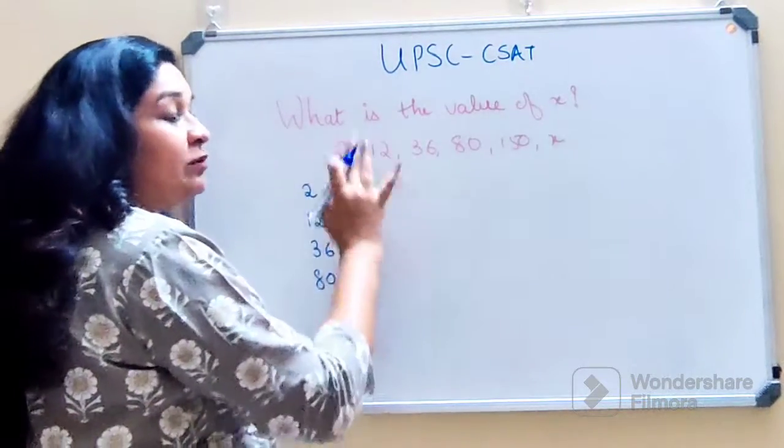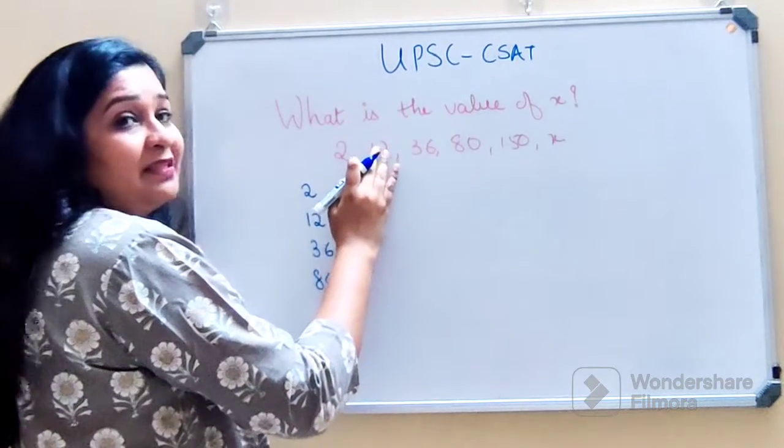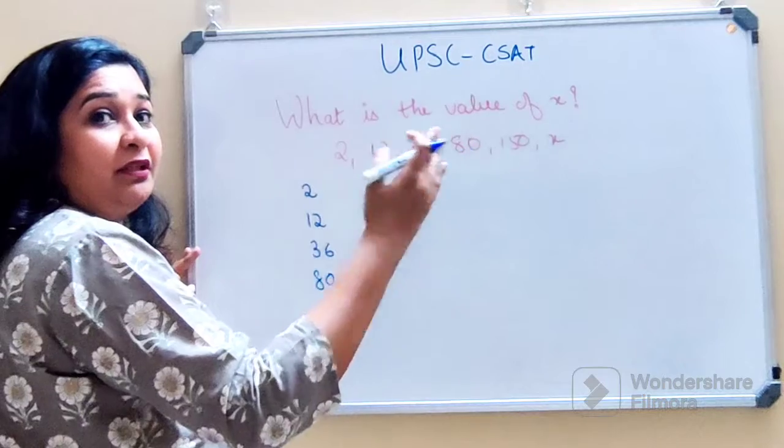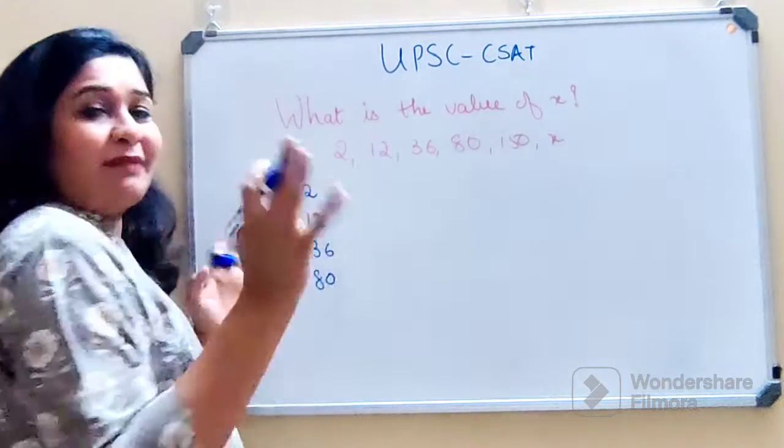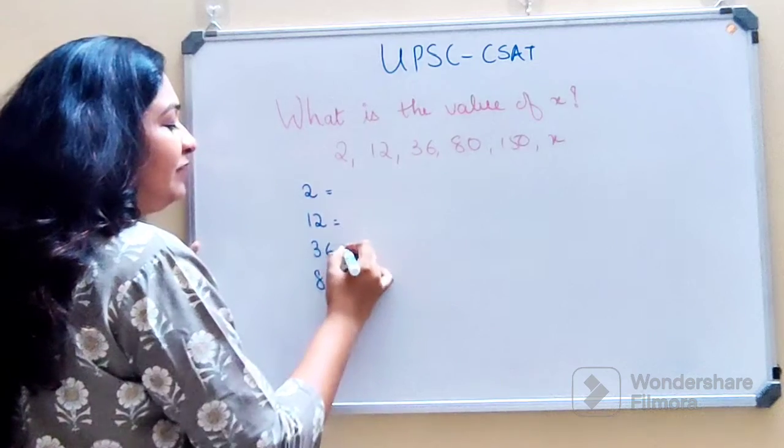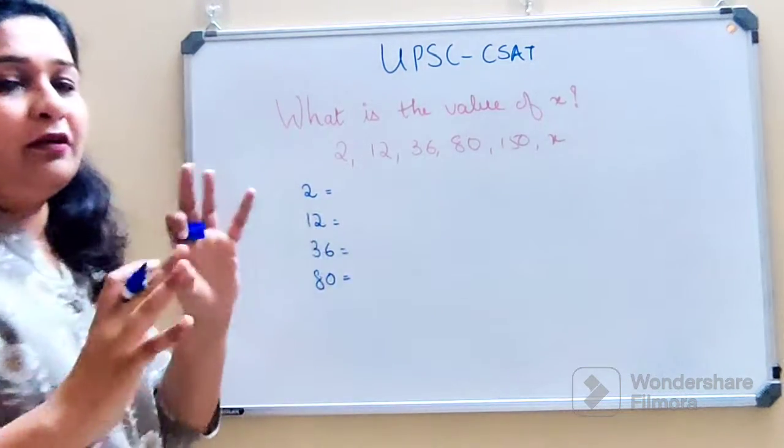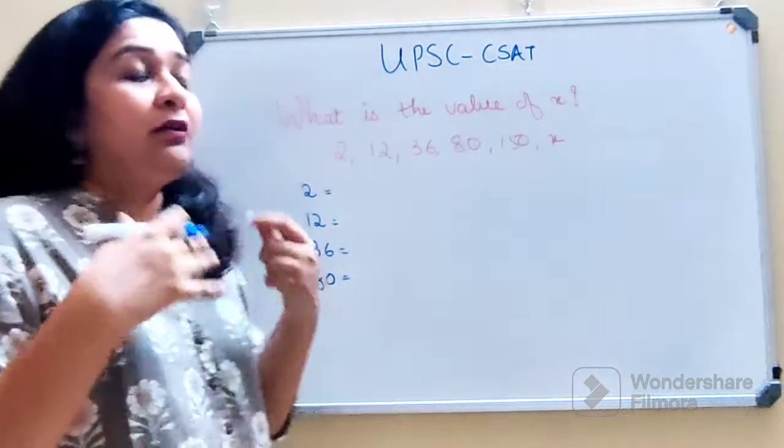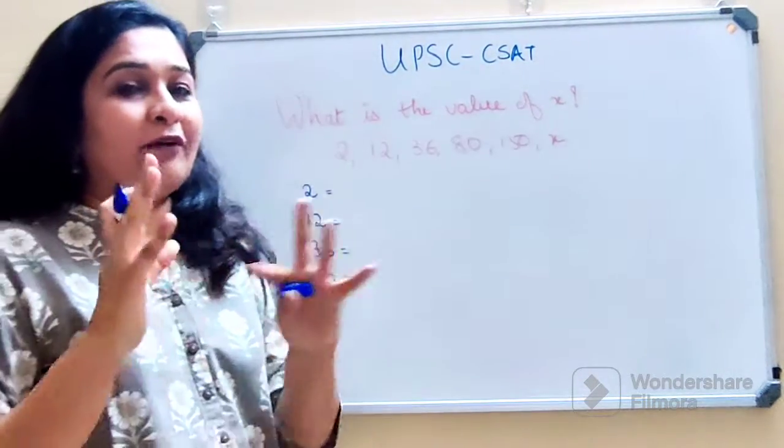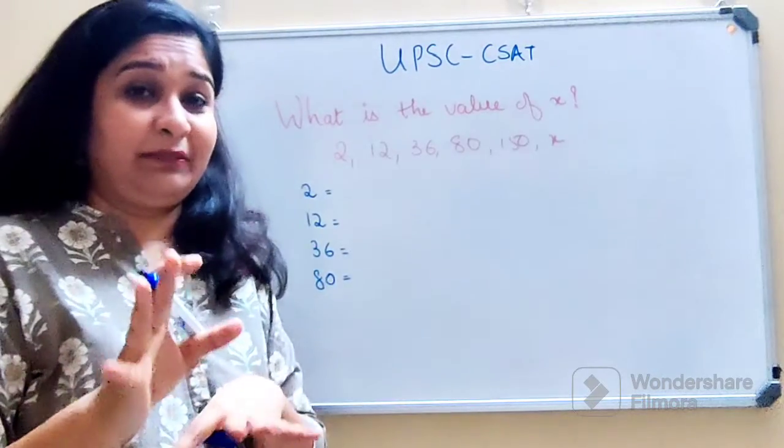The difference and everything is not working. If you see the difference between this is 10 and then here the difference is 24. So it doesn't match. So here normally when your differences are not getting coordinated and the future values are getting really big, it is normally you have to look into something called multiplication.